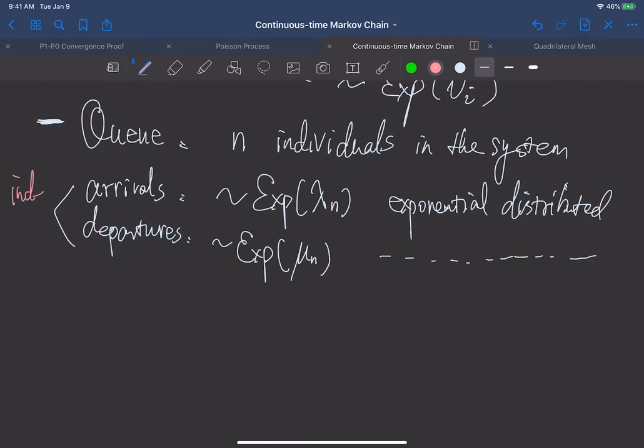And I want to emphasize these two, the arrival rate and the departure rate. And of course, the random variable which represent arrivals and departures, they are independent.